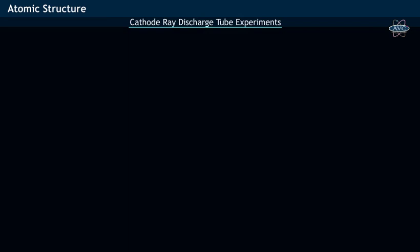Finally, from all these cathode ray discharge tube experiments, one may conclude that cathode rays consist of negatively charged particles called electrons.